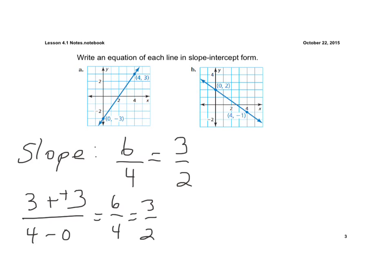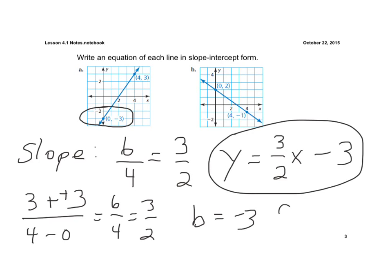And then all we need to know is the y-intercept. Well, the y-intercept, remember, always has an x value of 0. So in this case, our y-intercept, or our b, is just a negative 3. So the equation of this line in letter A would be y equals 3 halves times x minus 3. And there's our answer to letter A.